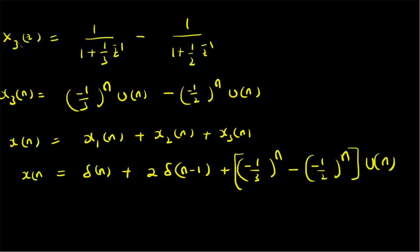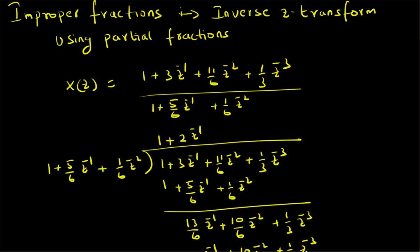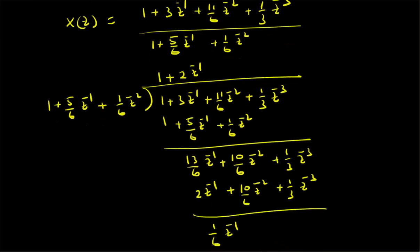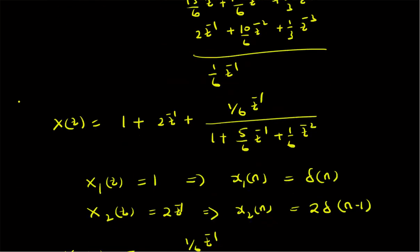To summarize, in this video we looked at the inverse z-transform of improper fractions using the partial fractions approach. X(z) was given as (1 + 3z⁻¹ + (11/6)z⁻² + (1/3)z⁻³) divided by (1 + (5/6)z⁻¹ + (1/6)z⁻²), which is an improper fraction because the numerator has a higher degree. Using long division, we found X(z) = 1 + 2z⁻¹ + (1/6)z⁻¹ / (1 + (5/6)z⁻¹ + (1/6)z⁻²).